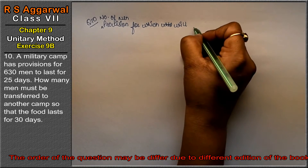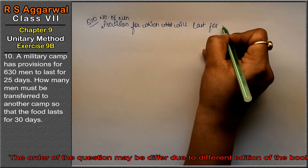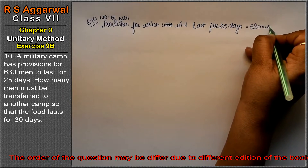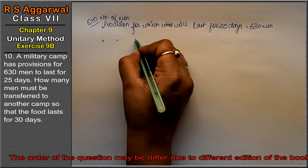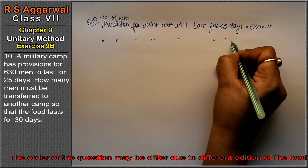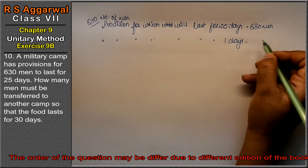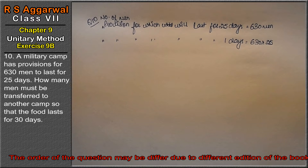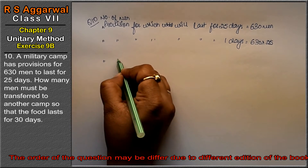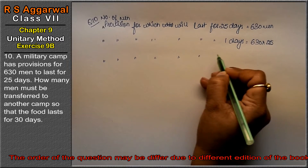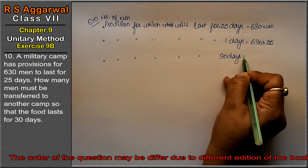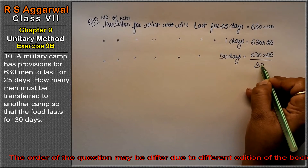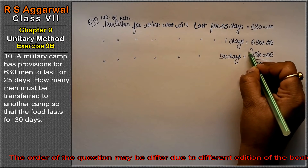The provision which will last for 25 days is equal to 630 men. So the number of men's provision for one day — the number of men who can stay if the provision lasts for 30 days — we need to find that using the unitary method.